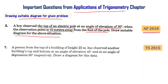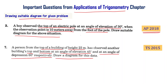A person from the top of a building of height 25 meters has observed another building's top and bottom at an angle of elevation of 45 degrees and an angle of depression of 60 degrees respectively. Draw the diagram for this data. This is from the Telangana public exam 2015. Let us solve these two problems now.